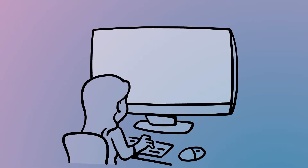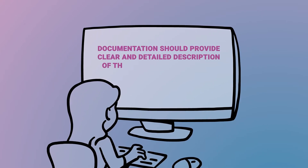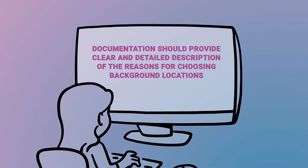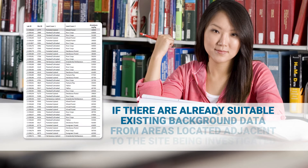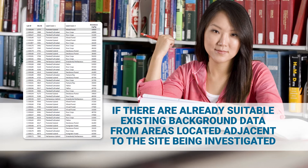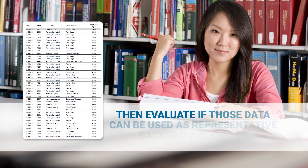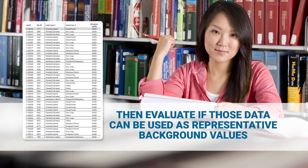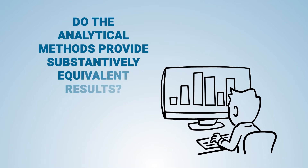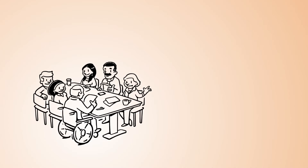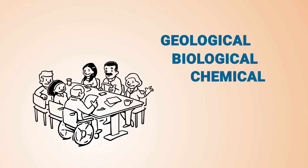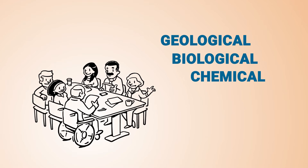When documenting your findings, it is important to include a clear and detailed description of the reasons for choosing background locations. The reasons need to be based on technically sound comparisons of the sample locations. If there are already suitable existing background data from areas located adjacent to the site being investigated, evaluate if those data can be used as representative background values. For example, were the samples collected in a similar manner? Do the analytical methods used provide substantively equivalent results? Were geological, biological, and chemical characteristics similar for the existing background study and the subject study?